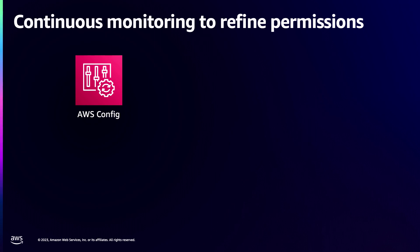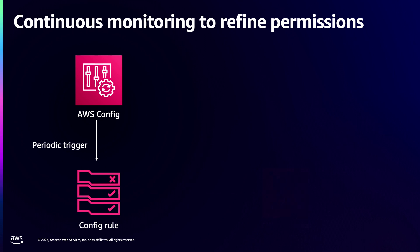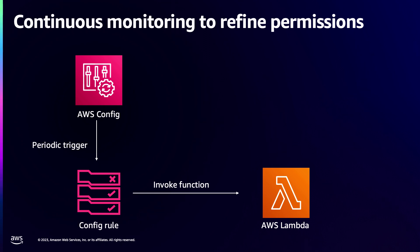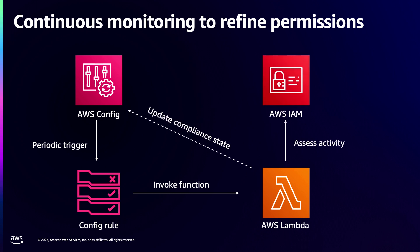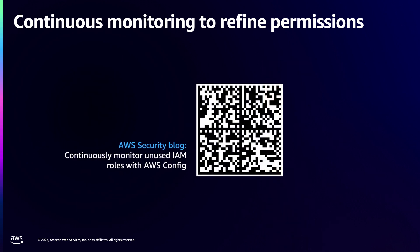If you are part of the security team who wants to automate and continuously review last access data to identify inactive permissions or inactive identities, you can use AWS Config for some of this automation. Set up a rule that gets triggered periodically, which invokes a Lambda function that goes through all roles in your account to identify inactive roles or roles not recently used. Based on this, the Lambda can update compliance in AWS Config, maintain the state, and keep you on top of which roles, identities, and permissions are not being used. There is a blog that covers this in detail.